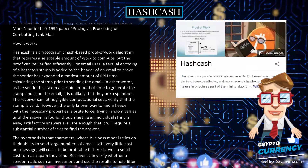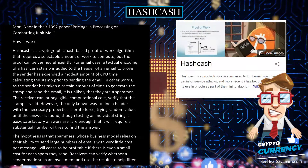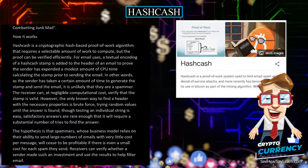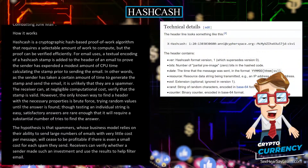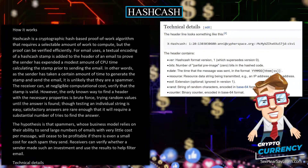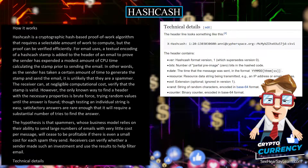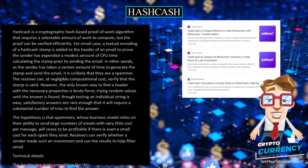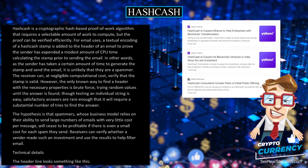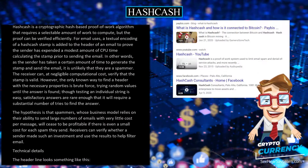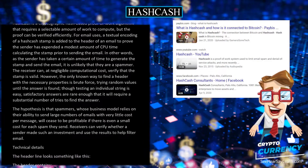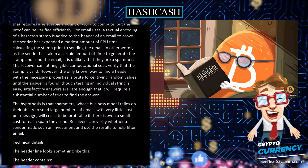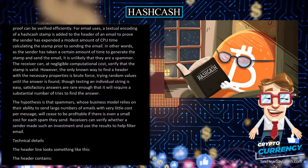The receiver can, at negligible computational cost, verify that the stamp is valid. However, the only known way to find a header with the necessary properties is brute force, trying random values until the answer is found. Though testing an individual string is easy, satisfactory answers are rare enough that it will require a substantial number of tries to find the answer.